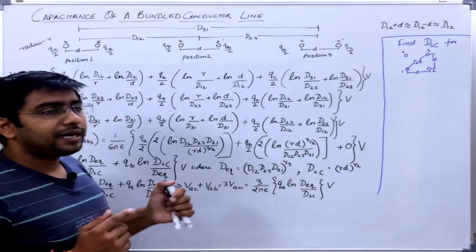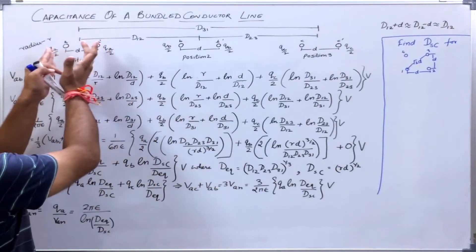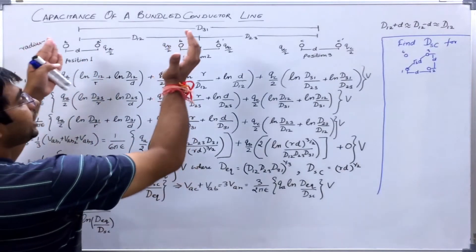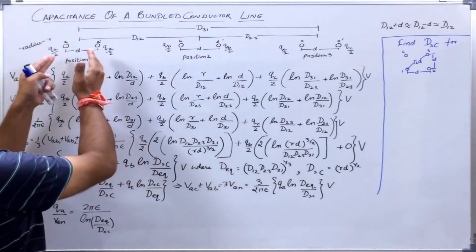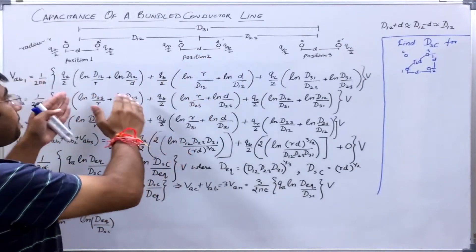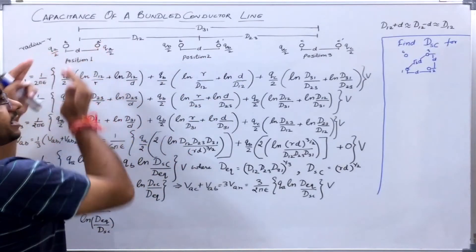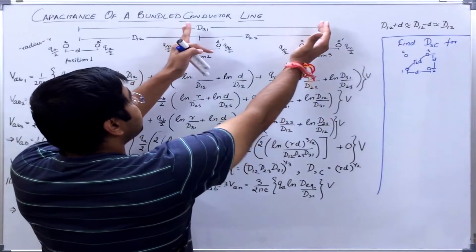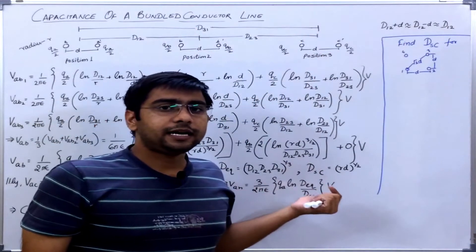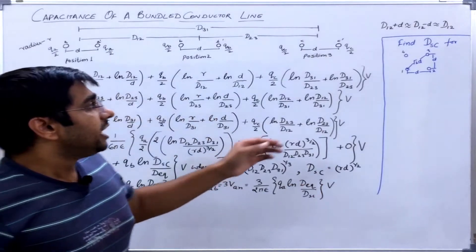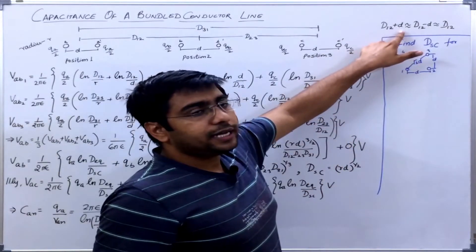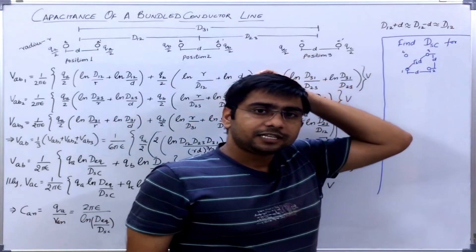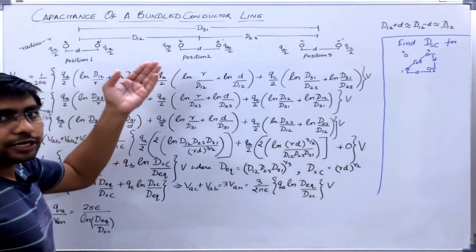We are also assuming that the distance between the same phase strands is very small as compared to the distance between the interphase conductors. That is, small d is very very small as compared to the distances capital D12, D23, and D31. So in this way we can write that D12 plus small d or D12 minus small d are approximately equal to D12 only. Similarly, I can write for other distances D23 and D31.